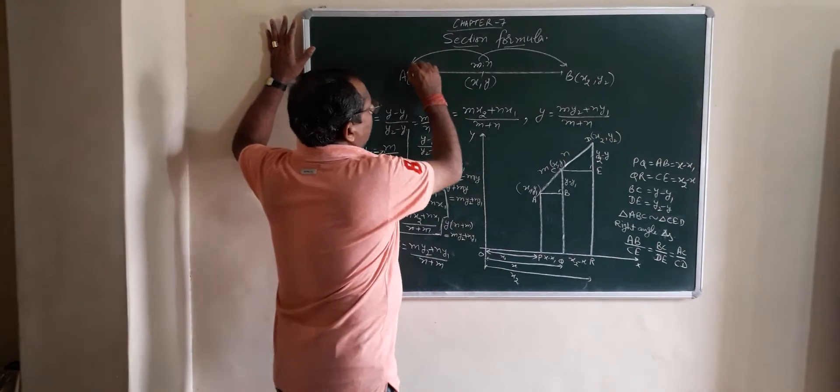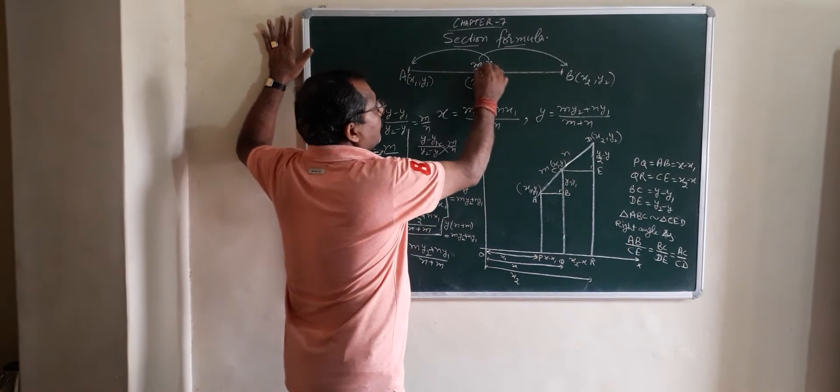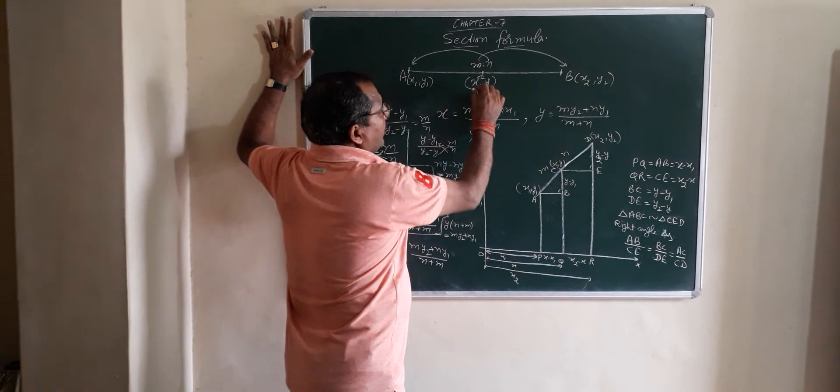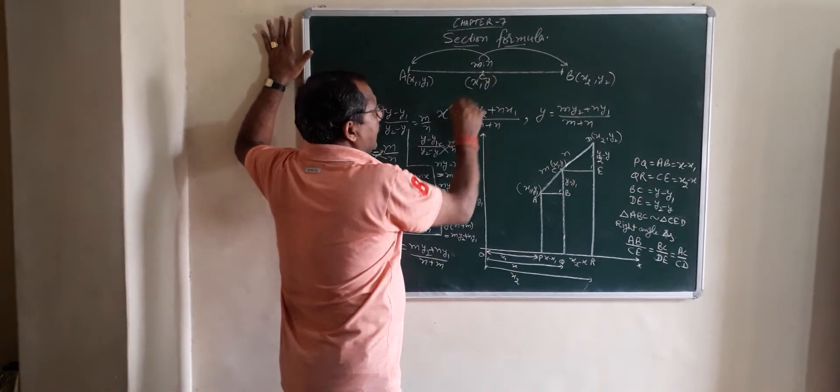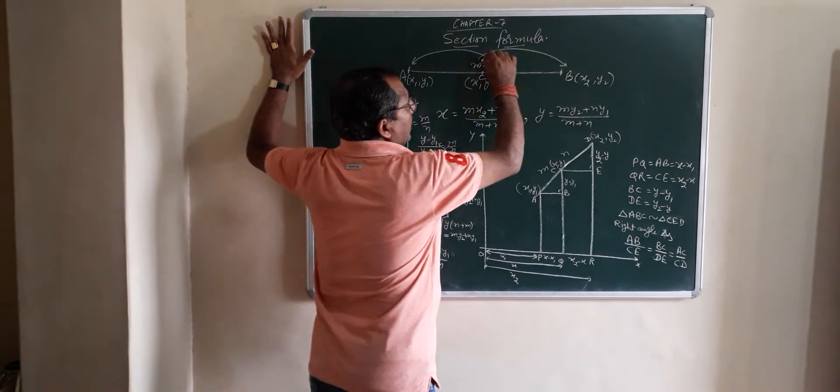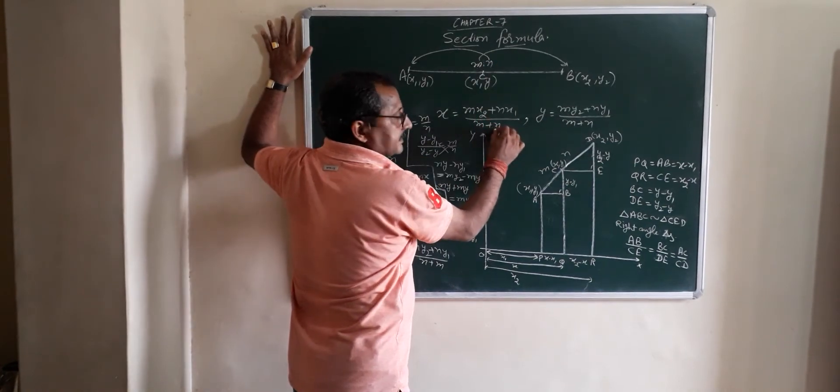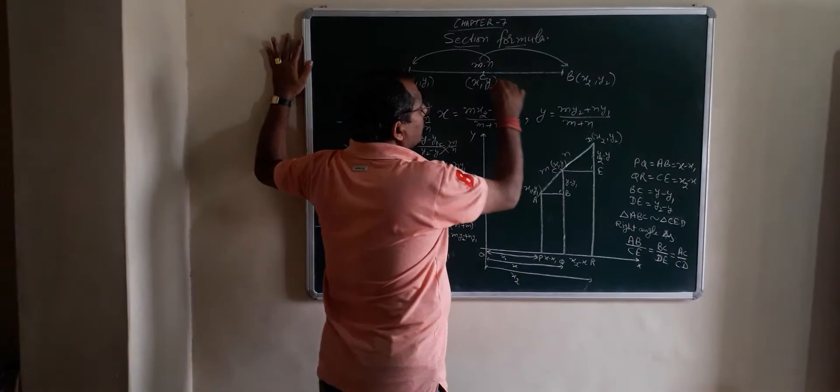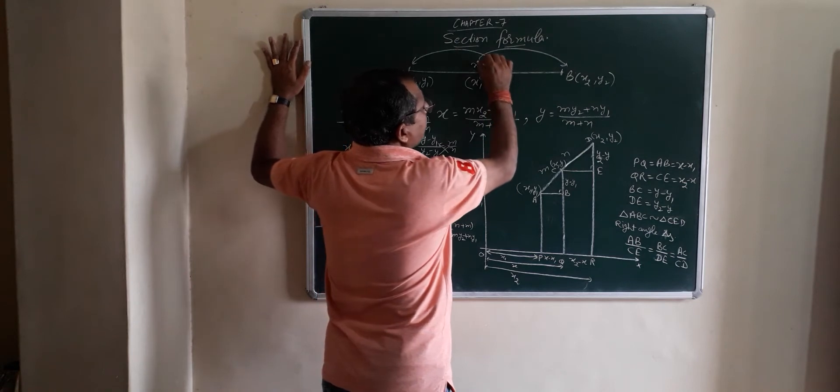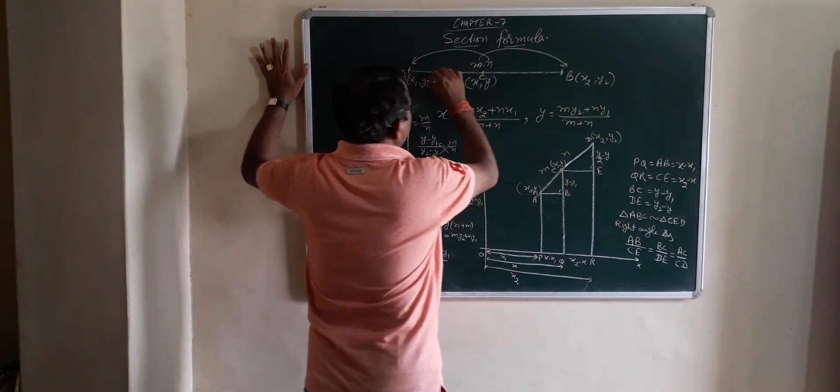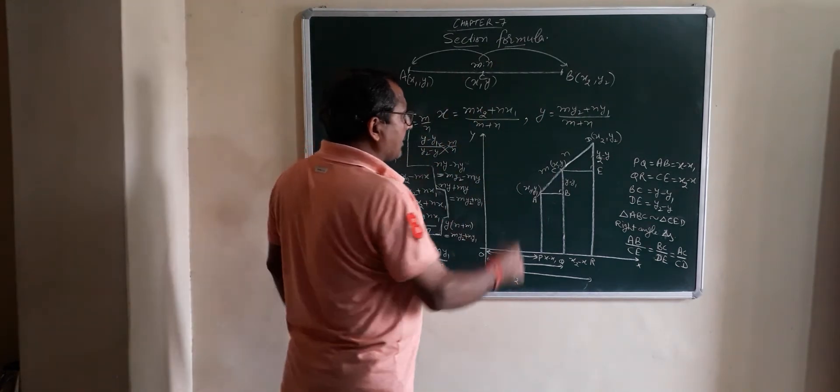A, B is the line segment and C is any point. Convert into ratio M ratio N. Find the coordinate of X and Y. Coordinate is C, X is equal to M X2 plus N X1 upon sum of their ratios, M plus N. Y is equal to coordinate Y, M Y2 plus N Y1 upon sum of their ratios. Now let's prove it by the Cartesian system.